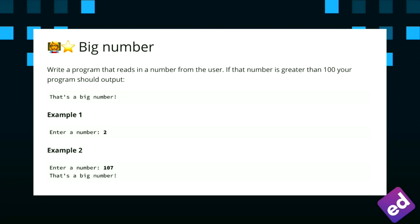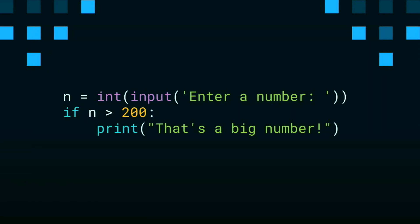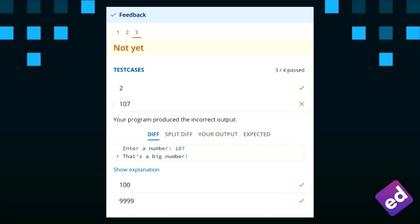The students will get this exercise description and then they'll write some code. The code might look something like this. I've intentionally put a bug in there. Hopefully you can spot it for that exercise. And then they'll go ahead and submit it. After they've submitted it, they'll get some feedback from a number of test cases that we've written ourselves. In this example, there are four test cases shown. They're just based on the number that we input into the program to test whether the student passed or not. In this case, the student didn't pass the 107 test case because they printed out that's a big number when they shouldn't have.